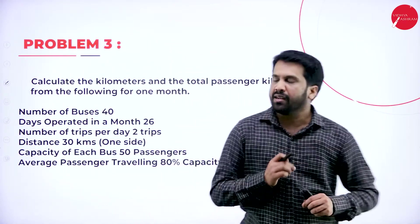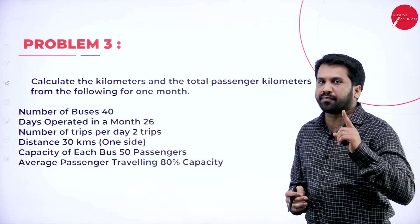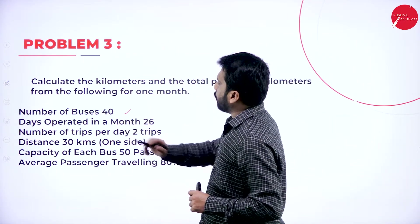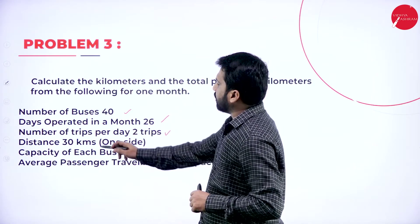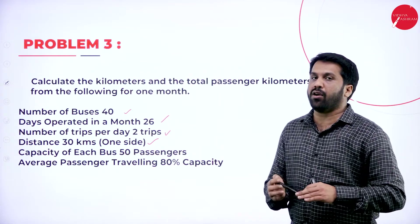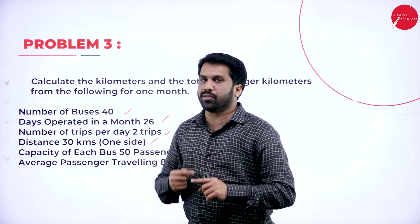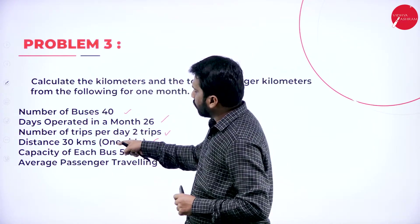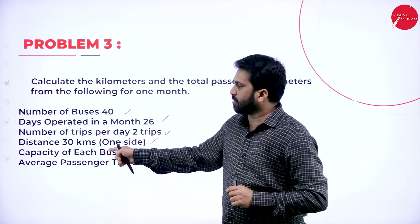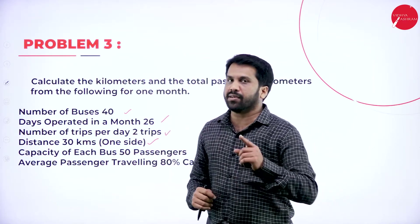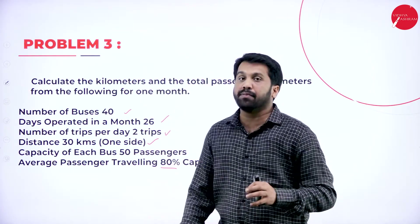The last problem for today — Problem 3: Calculate kilometres and total passenger kilometres for one month. Number of buses: 40. Days operated: 26, excluding Sunday. Number of trips per day: 2. Distance: 30 kilometres, one side — so two sides means 30 plus 30 = 60. Unless the problem mentions 'round trip' specifically, we always add both sides. Capacity of each bus: 50 passengers. Average passenger capacity: 80%.